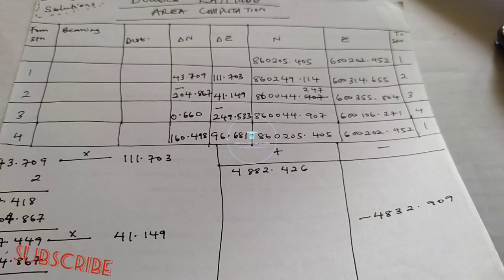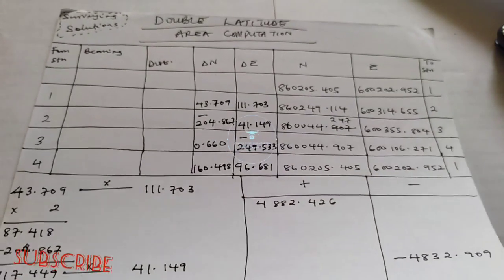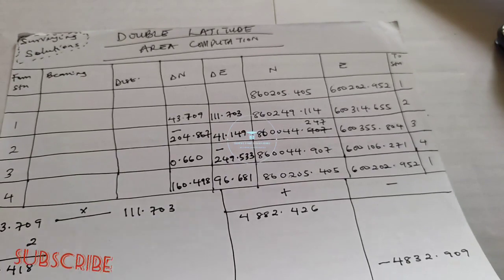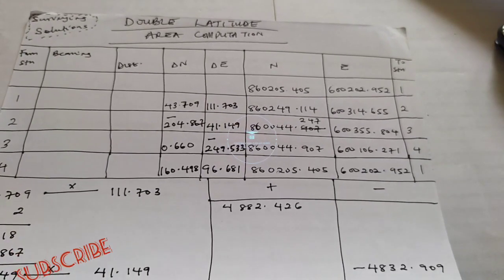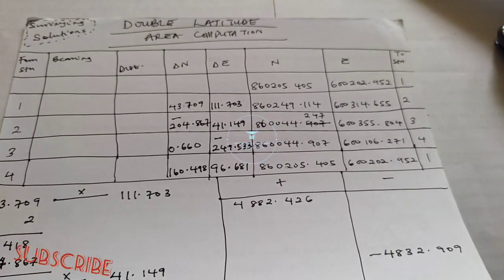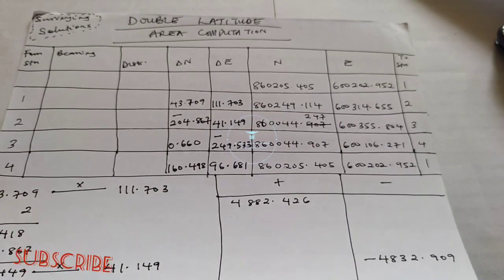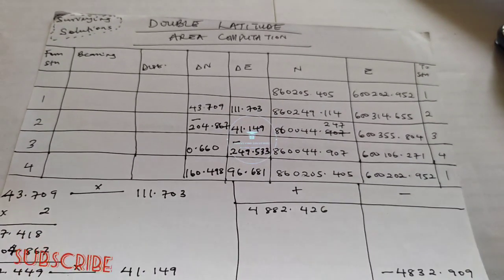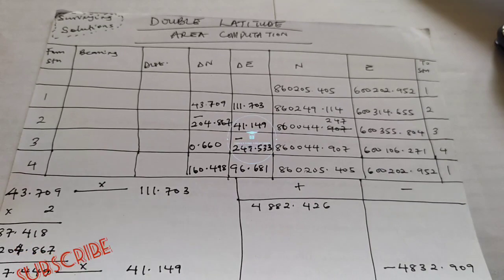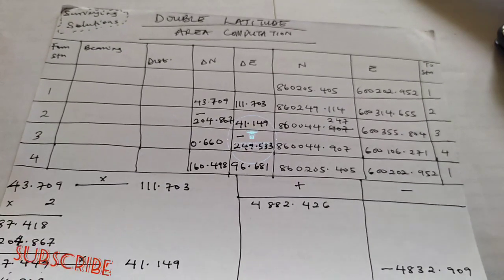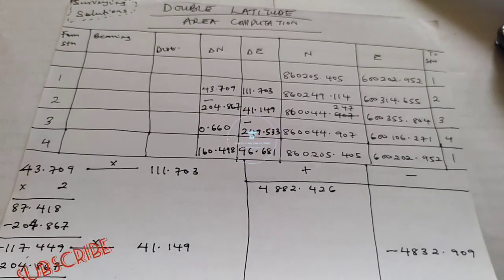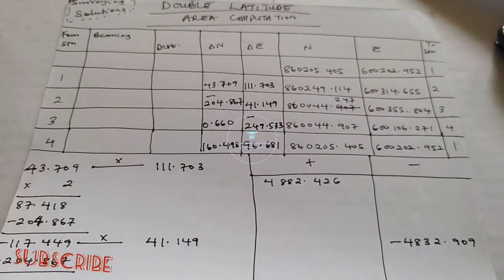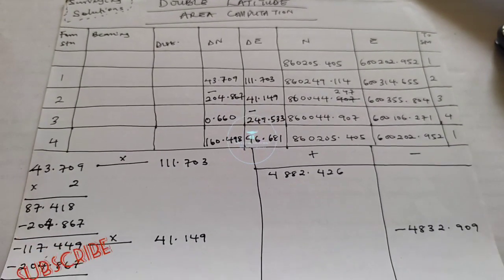Before we do anything, these are the same coordinates we used to calculate the area previously, and those are the same coordinates we are now going to use for this other method — the double latitude method. We have double latitude and we have double departure.